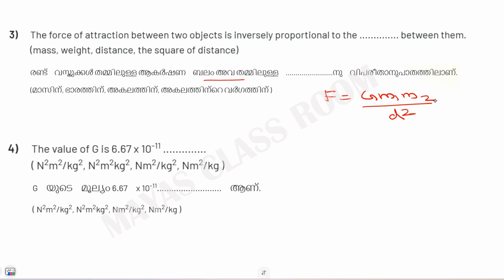If you consider the masses of the objects and the distance between them — that is, the square of the distance — the value of G is 6.67 times 10 raised to minus 11, which is the universal gravitational constant, with units of Newton meter squared per kilogram squared.